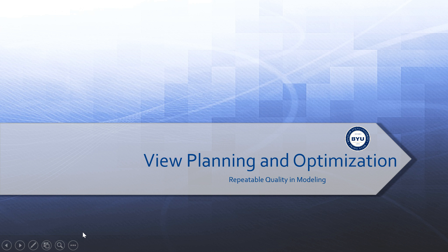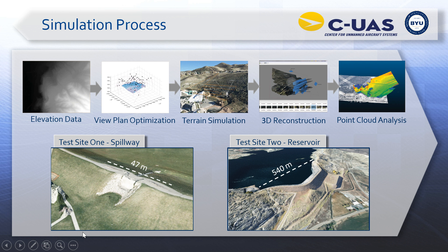Now we'll move on to view planning and optimization. We want to specify an accuracy requirement and, with any platform, fly and capture images in a way to meet that requirement. The simulation process: on any new site, we first load USGS elevation data or other elevation sources, then perform a view plan optimization using optimization techniques to determine where to fly and how to take pictures. We load that into a simulated autopilot with terrain simulation — software that Hollywood uses to generate artificial terrain. We simulate the flights, develop models with 3D reconstruction, do point cloud analysis to check accuracy, and then often fly the actual site to verify.